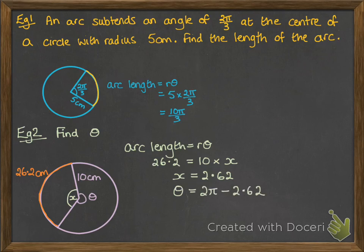And from there, we just need to subtract it from 360, the whole circle. But since we're in radians, 360 is 2π. So theta is 2π, take away 2.62. So it'll be 3.66 radians.